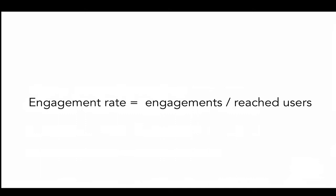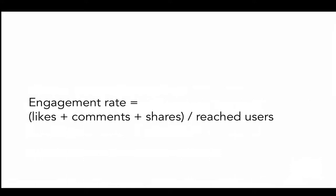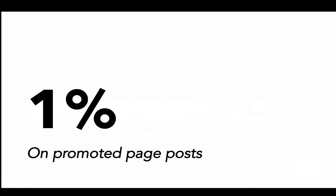Engagement rate — engagements over reached users — is actually really easy. It's the total number of likes, comments and shares over the reached users. So if we've had one like, one share and one comment, that's three engagements. If we reached 100 users with that post, we divide three by 100 and that figure is 0.03.